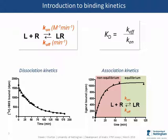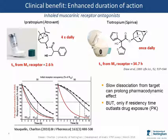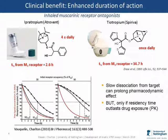Perhaps the best-known clinical benefit of binding kinetics is enhancing duration of action. The biggest example has been inhaled muscarinic receptor antagonists for the treatment of chronic obstructive pulmonary disease. Two molecules from Boehringer Ingelheim — ipratropium, which needs to be dosed four times a day, and tiotropium, which only requires once daily dosing. Although the pharmacokinetics are not identical, the team discovered by radiolabelling these materials that the dissociation rate from the M3 receptor is much slower for tiotropium — 34.7 hours — which contributes a large component to that once daily duration of action.